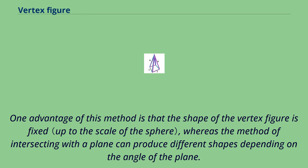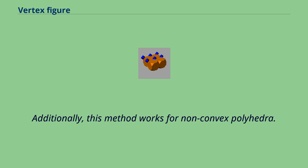The cut surface or vertex figure is thus a spherical polygon marked on this sphere. One advantage of this method is that the shape of the vertex figure is fixed, whereas the method of intersecting with a plane can produce different shapes depending on the angle of the plane. Additionally, this method works for non-convex polyhedra.